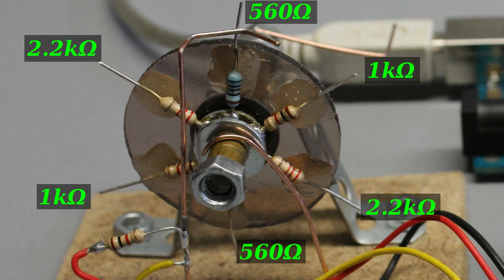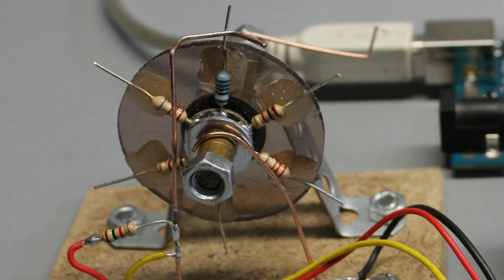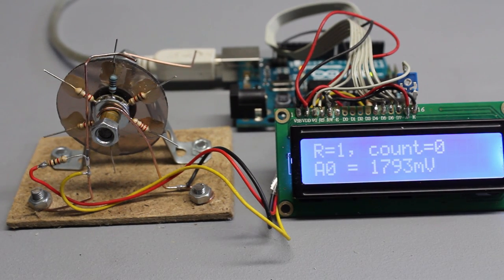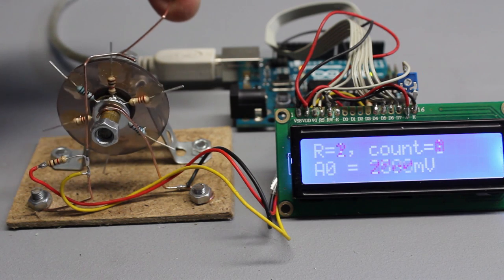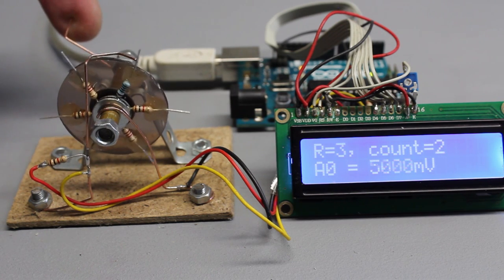With 3 additional resistors also having 560 ohms, 1 and 2.2kΩ, the full turn is divided into 6 steps with 60 degrees each.